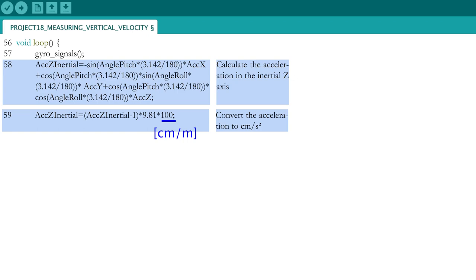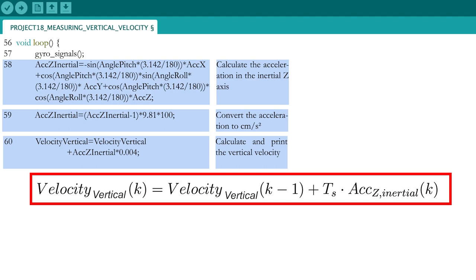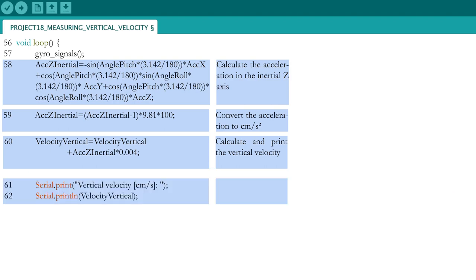To take into account the conversion from meter to centimeter, just multiply the result with 100. The vertical velocity is calculated by integrating the acceleration in the inertial Z direction. Now print the vertical velocity and enter the loop part by waiting until 4 milliseconds have passed.